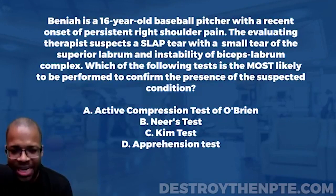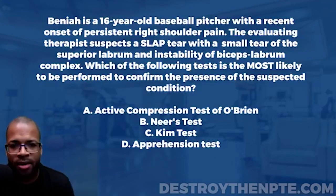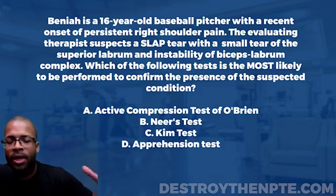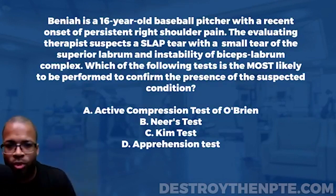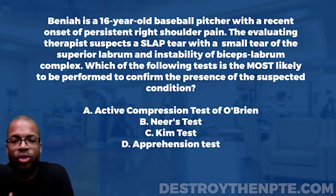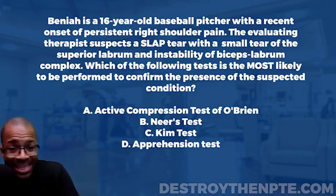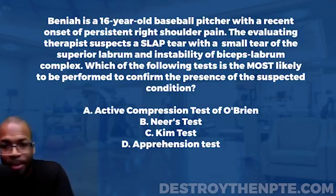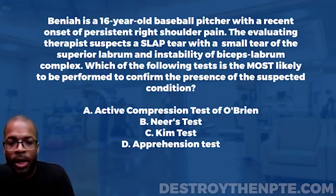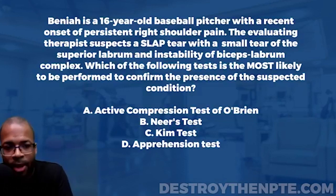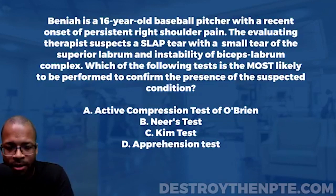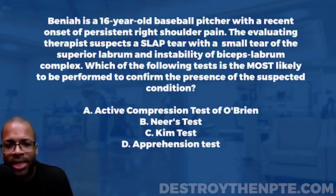Benaiah is a 16-year-old baseball pitcher with persistent right shoulder pain. There are quite a few different structures in the shoulder that can potentially cause pain, especially for a baseball pitcher — joint issues, bone, muscle or tendon like the supraspinatus, labral issues, or ligament issues. As we continue down the question, the evaluating therapist suspects a SLAP tear — superior labrum anterior to posterior — with a small tear of the superior labrum and instability of the biceps-labrum complex.